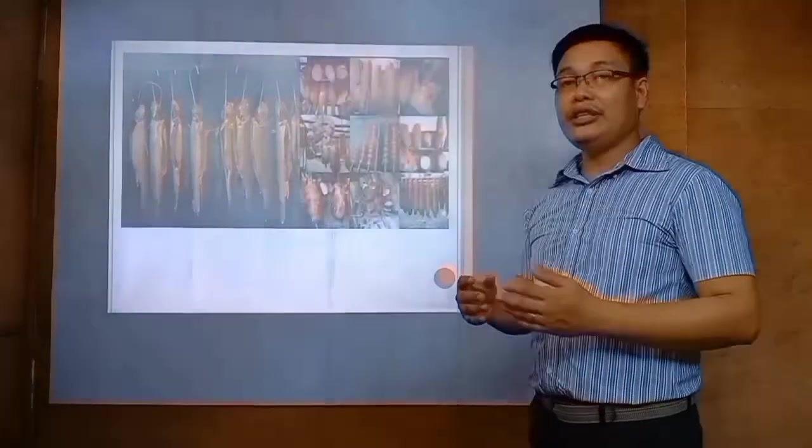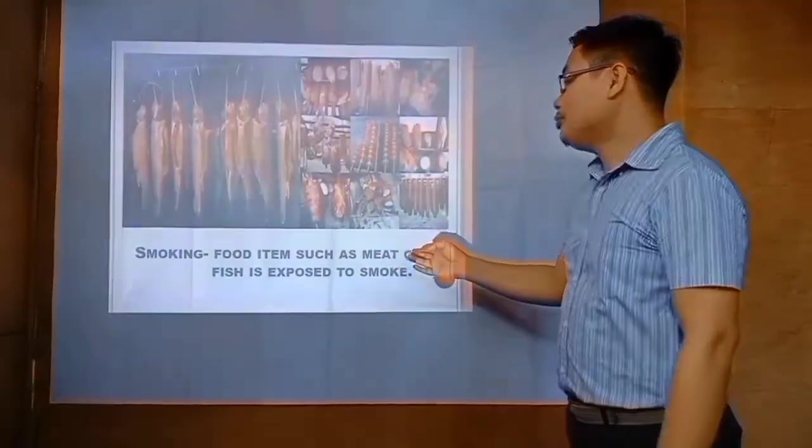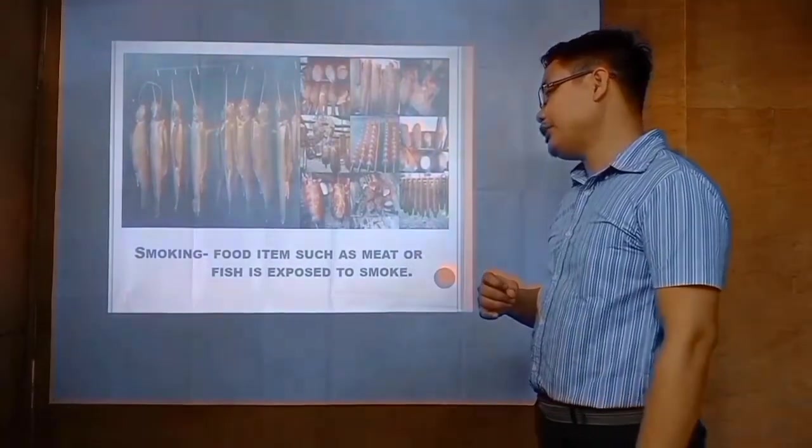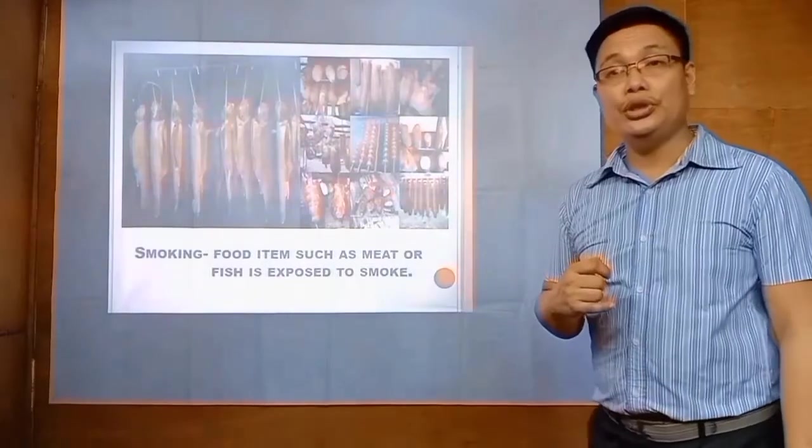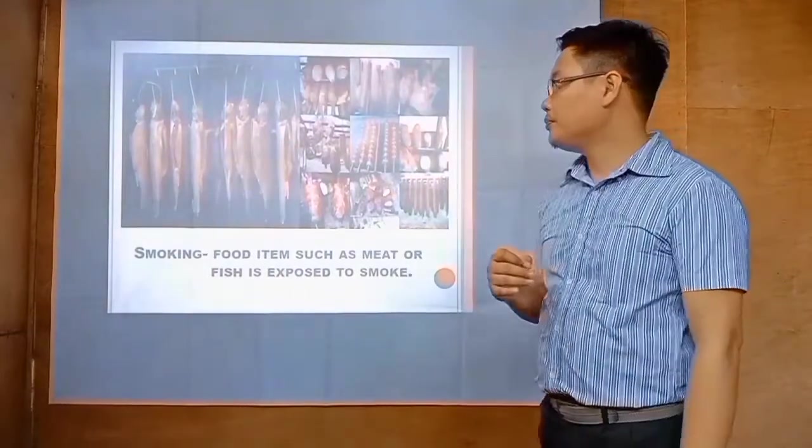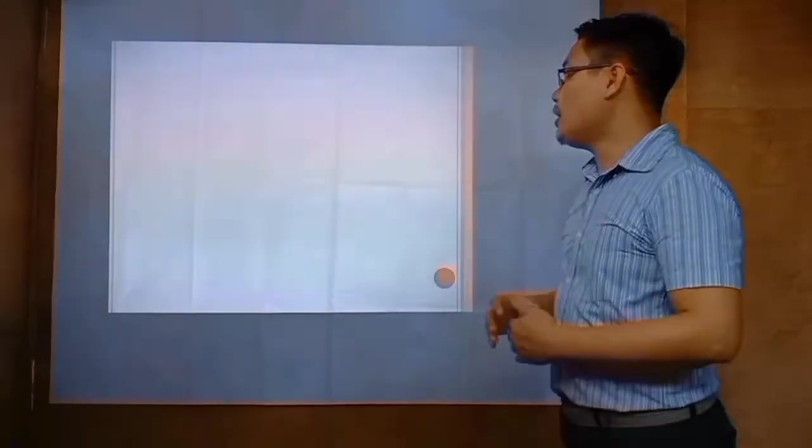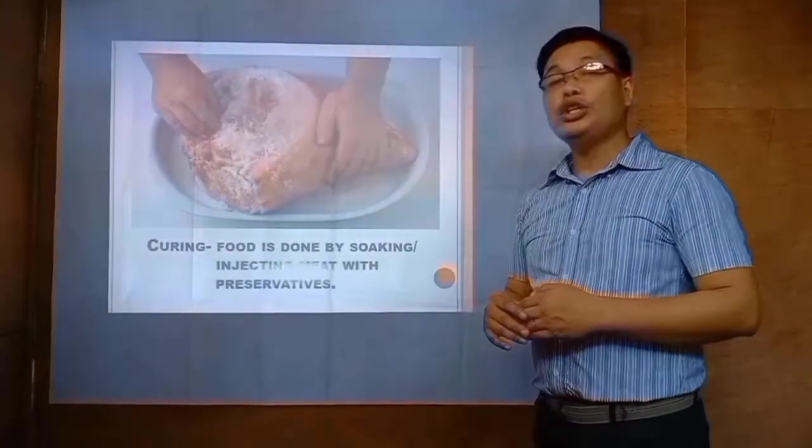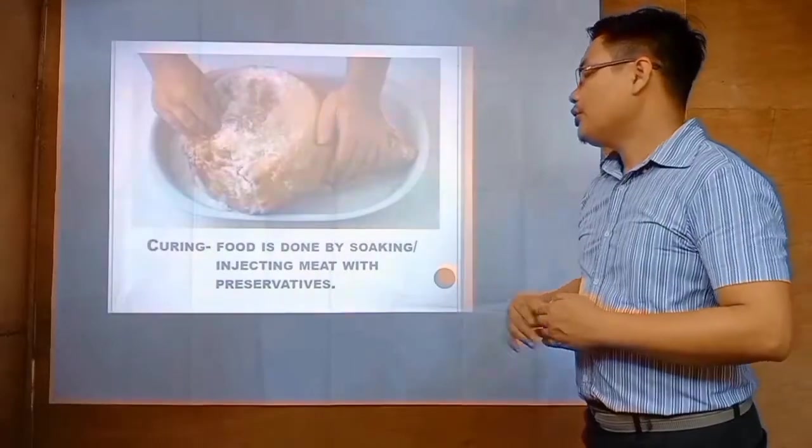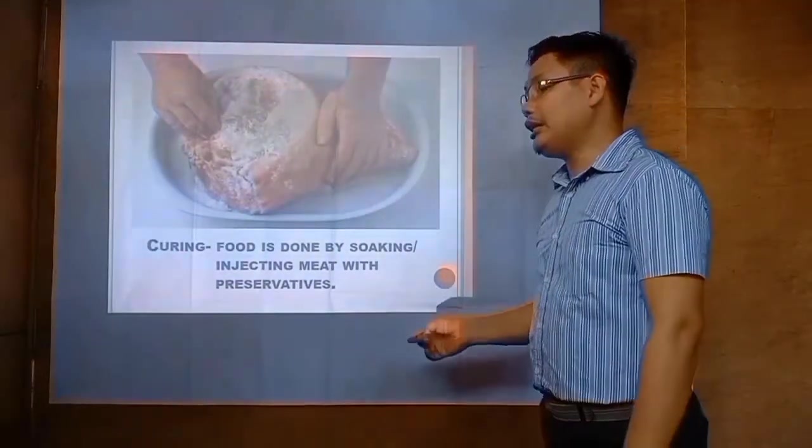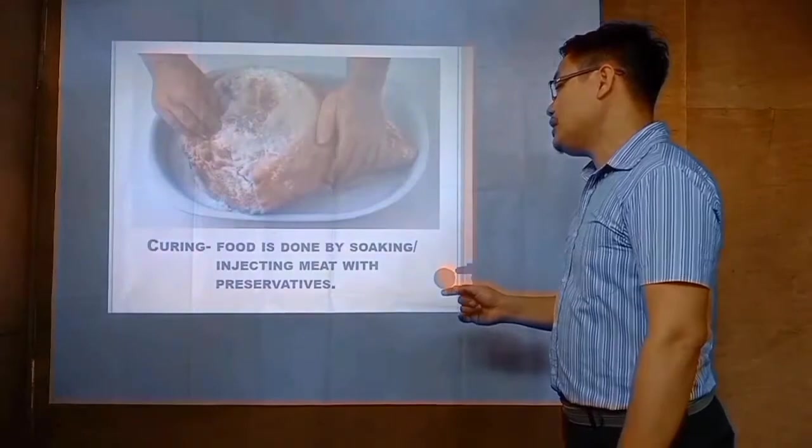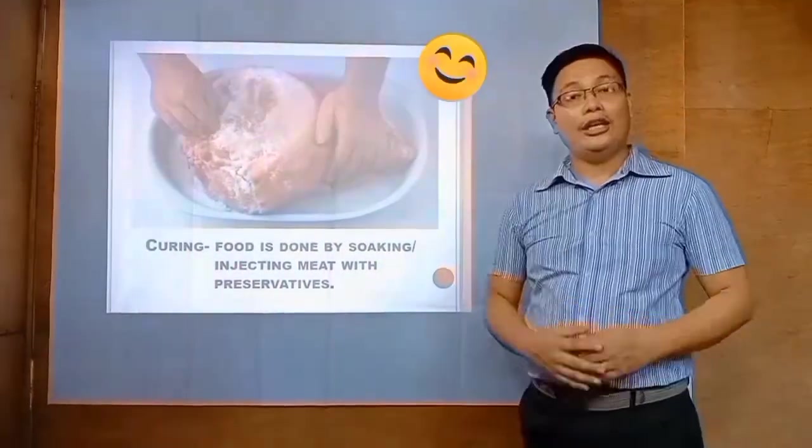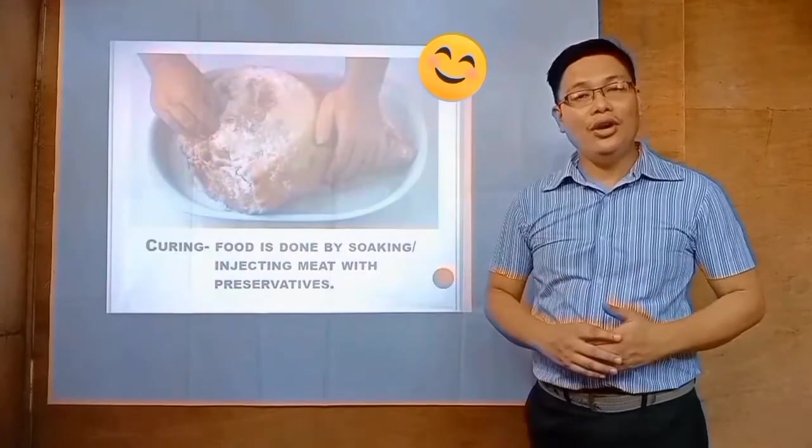This is smoking. The food such as meat or fish is exposed to smoke. And the last one is curing. Curing of food is done by soaking or injecting meat with liquid preservatives. Now class, let's move on to our second activity.